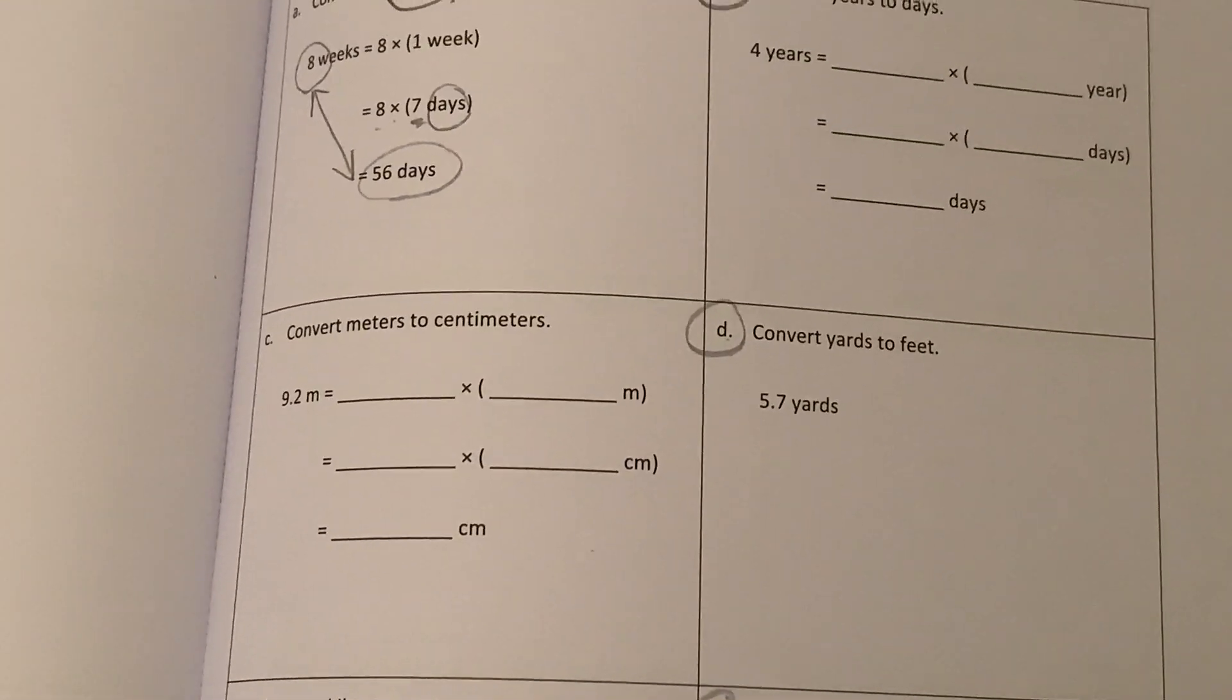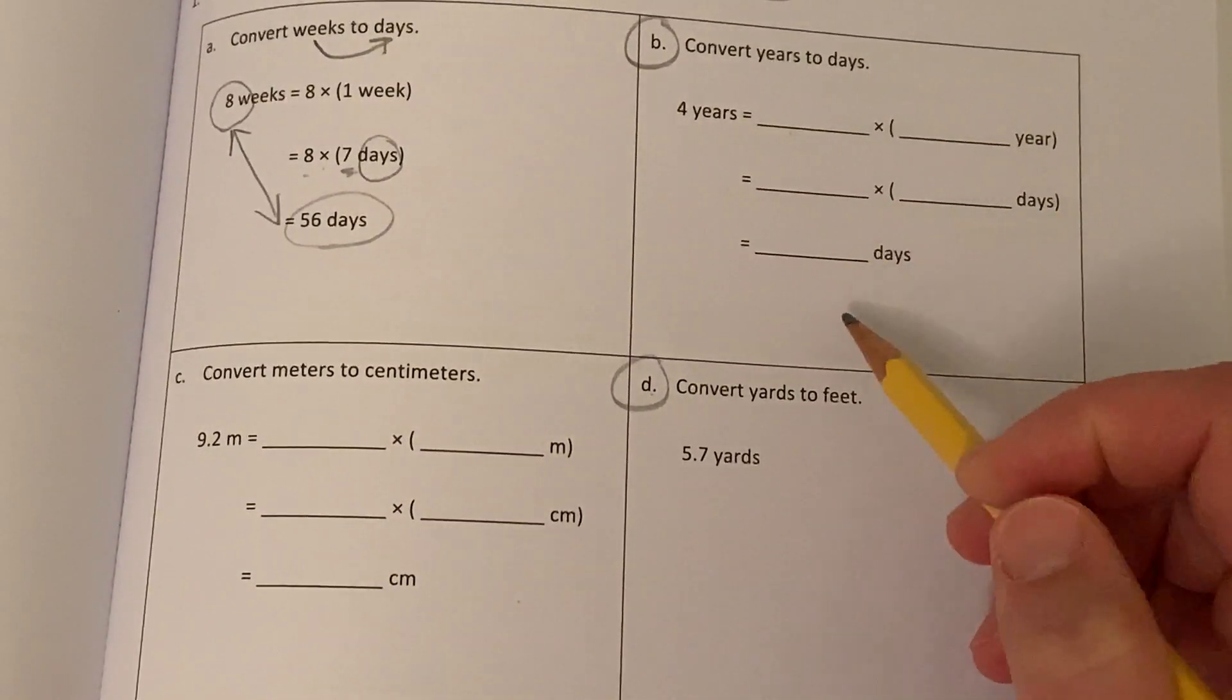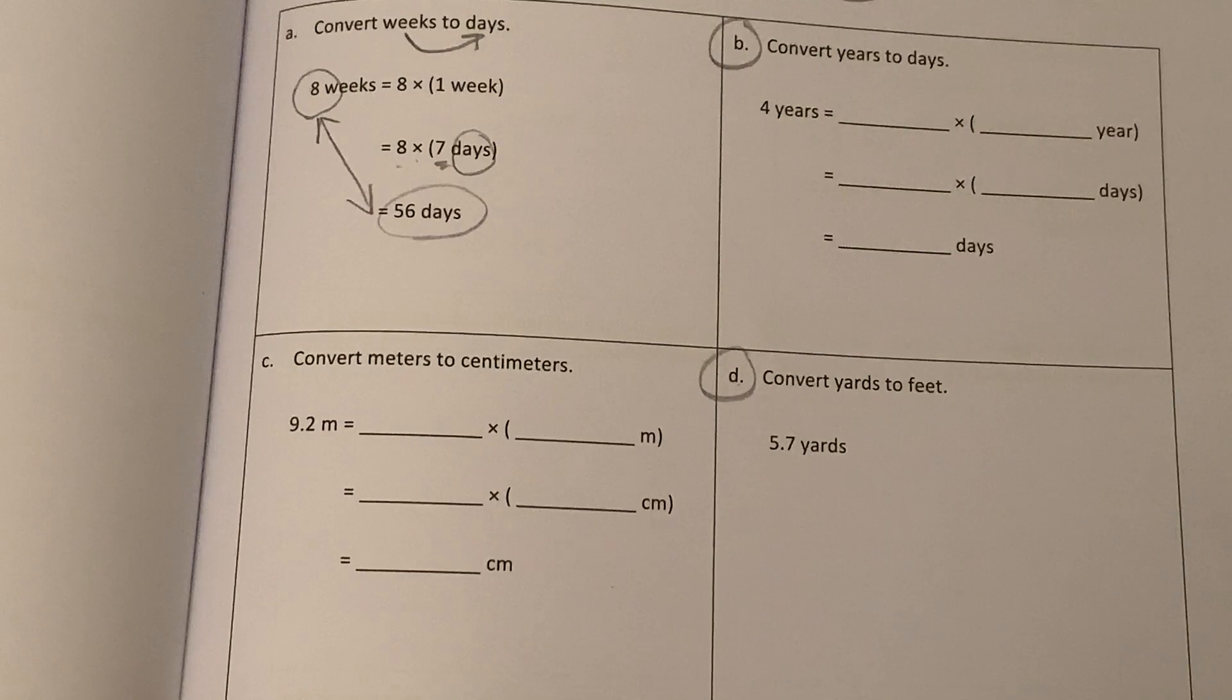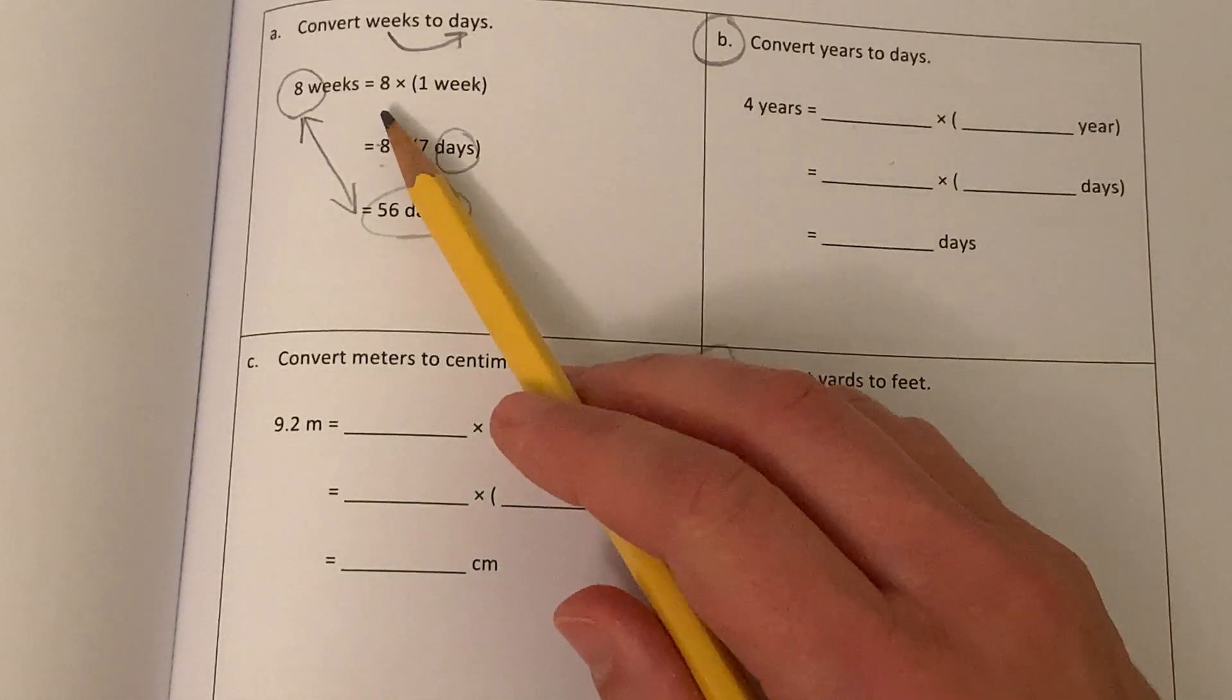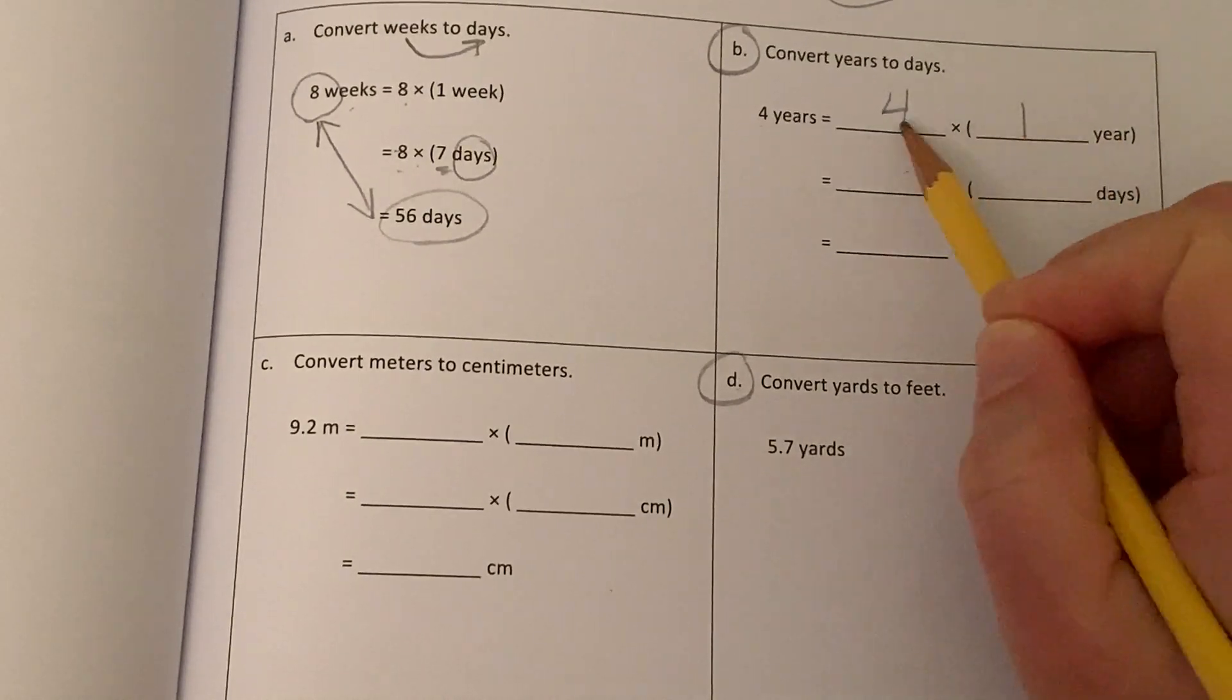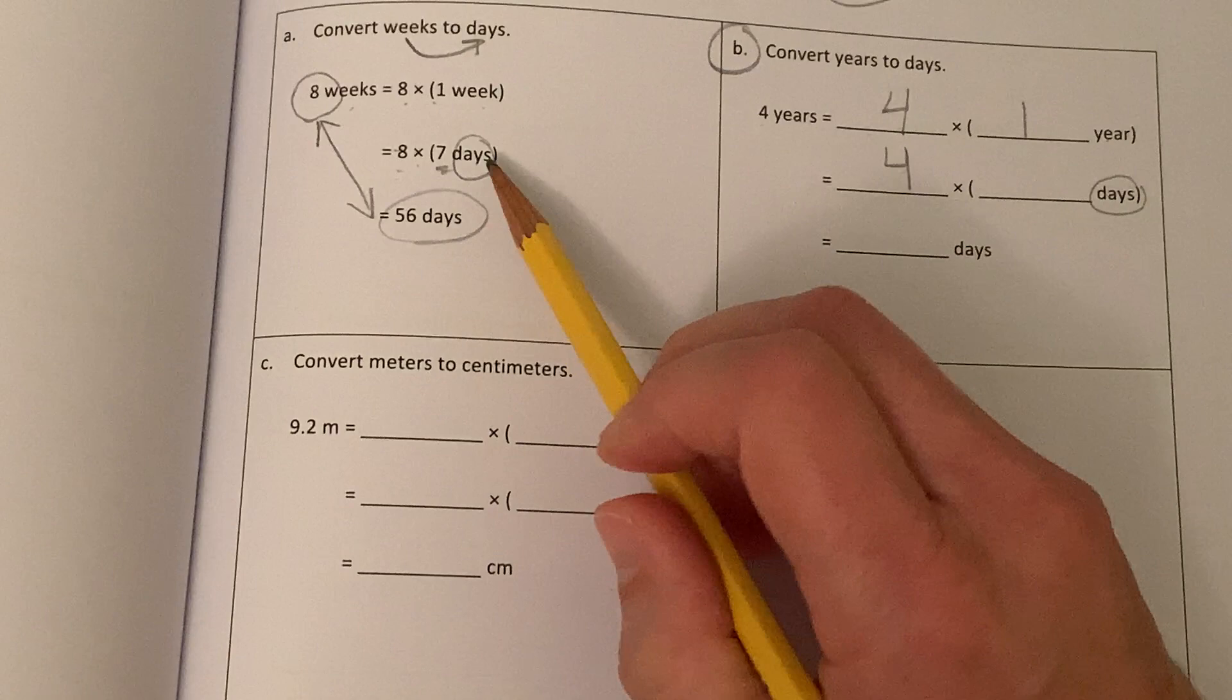So on this page, we're going to do three problems. So I will do B with you, and then you do D and F by yourself. So in this book, they are giving us blanks to fill in. I do not mind if you skip the blanks. If you understand how to do this without filling in the blanks, sometimes it's easier to do it the way that's easiest for you. That's totally fine. And if you want to fill it in, then you can use this as your guide.